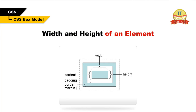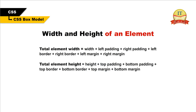Width and height of an element. When you set the width and height properties of an element with CSS, you set only the width and height of the content area. To calculate the full size of an element, you must also add the padding, borders, and margins. The total element width equals width plus left padding plus right padding plus left border plus right border plus left margin plus right margin. The total element height equals height plus top padding plus bottom padding plus top border plus bottom border plus top margin plus bottom margin.